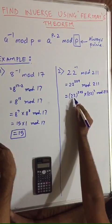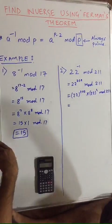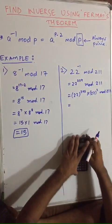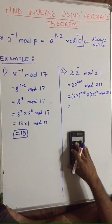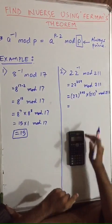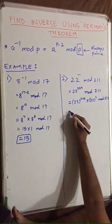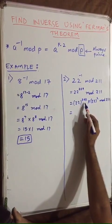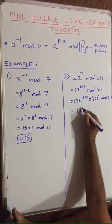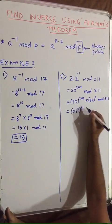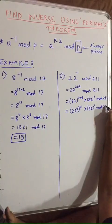Now we can factorize 205 further, because 22 raised to 205 will take us to 10 raised to something, which we don't want. So we have to factorize 205 again. We can write it as 22 raised to 5 raised to 41 into 22 raised to 4 mod 211. Now we have to factorize this further — so it becomes 22 raised to 4 mod 211.